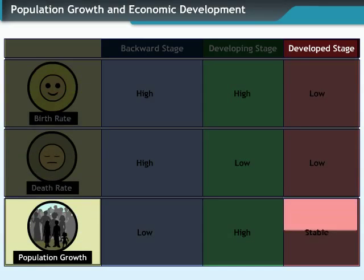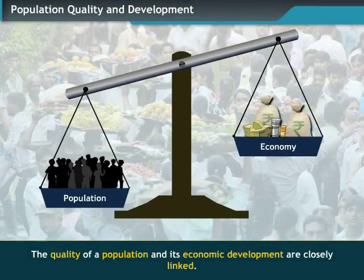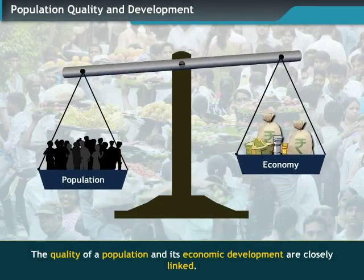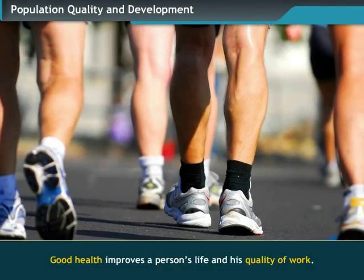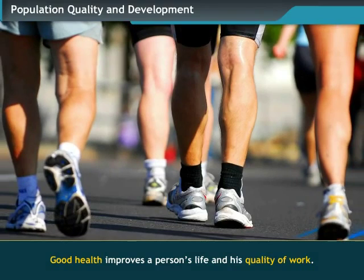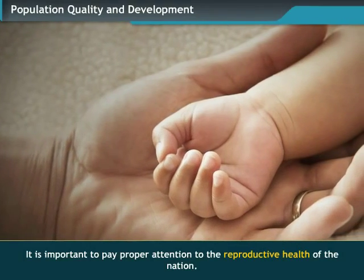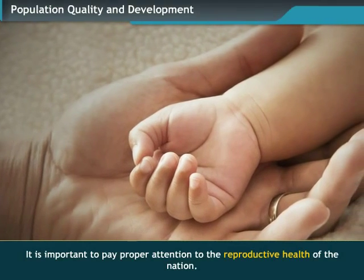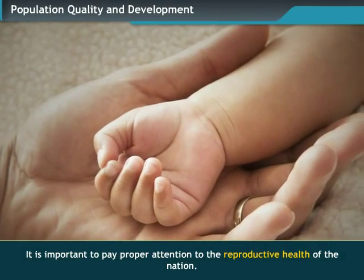There is a close link between the quality of population and the population growth rate. Good health improves a person's life and quality of work. To improve the quality of population health, proper attention is required in the Reproductive Health Zone.